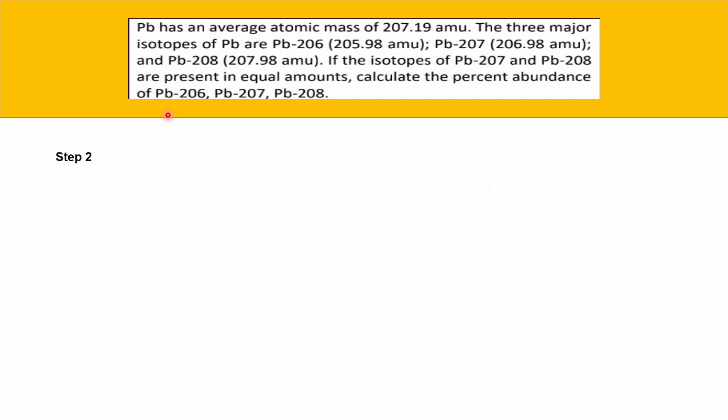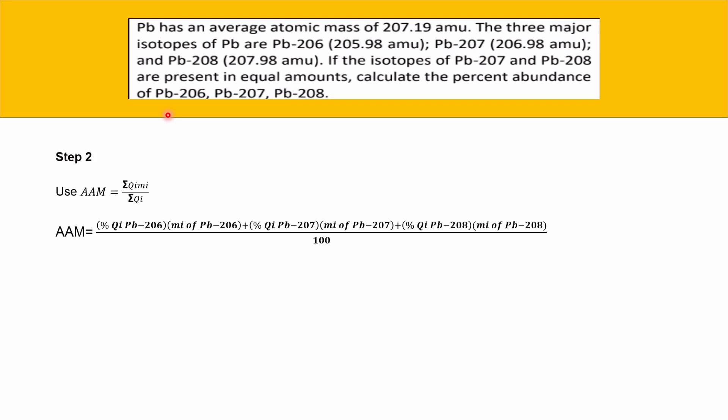The next step is to use the average atomic mass formula, which is the sum of (Ki × Mi) divided by total Ki, where Ki is isotopic abundance and Mi is isotopic mass. We need to find the total of Ki times Mi for all isotopes.